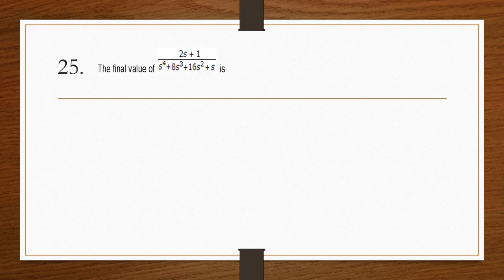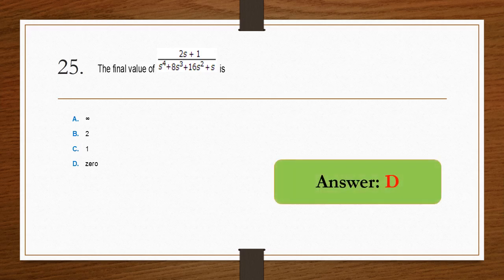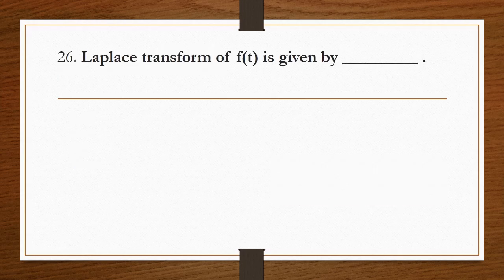The final value of (2s + 1) / (s⁴ + 8s³ + 16s² + s) — using the final value theorem, option D is the right answer: 0.